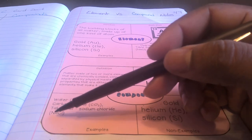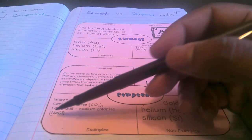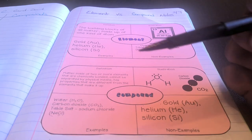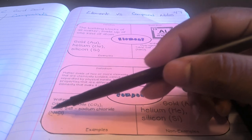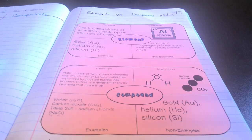And then for salt, we have a capital N, lowercase a, capital C. So that tells me there are two or more elements because there are two or more capital letters.